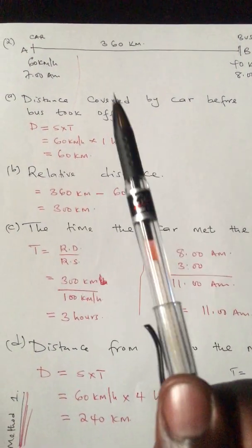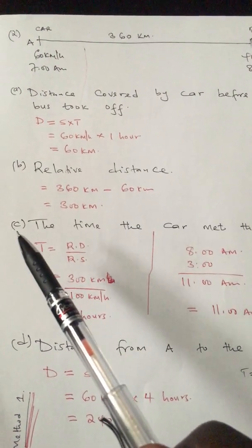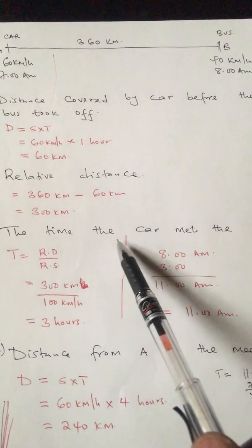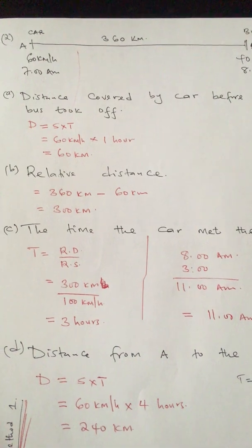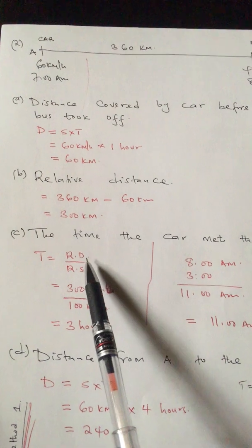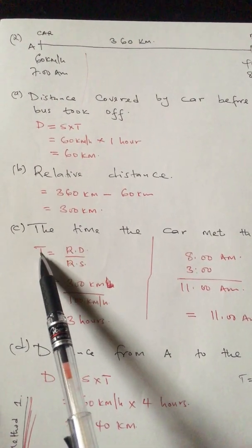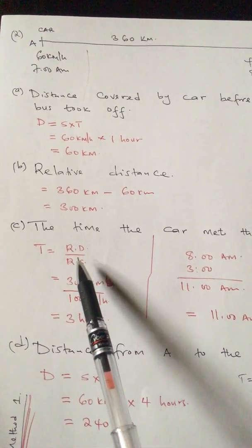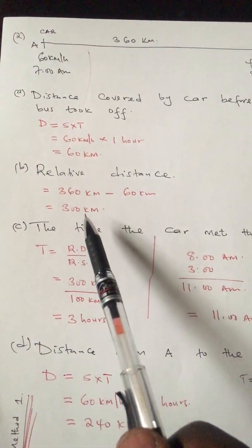Note that relative distance is normally used in the next part. The question asks: calculate the time the car met the bus. The time is always relative distance over speed, but since we are comparing two moving bodies, time equals relative distance over relative speed. Relative distance we've already got — go back to the explanation if needed.